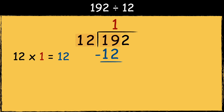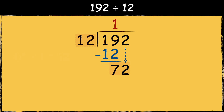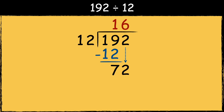Next we need to find out what we have left over. 19 take away 12 is 7. Now we can bring the last digit down. How many 12s go into 72? 12 goes into 72 six times, so 6 goes at the top. The answer is 16.